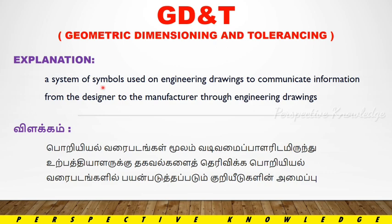GD&T explanation: it is a system of symbols used on engineering drawings to communicate information from the designer to the manufacturer. When you manufacture the product, you can easily identify and communicate using the name of GD&T.